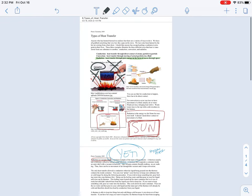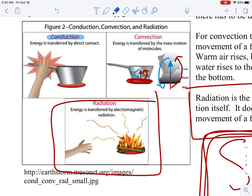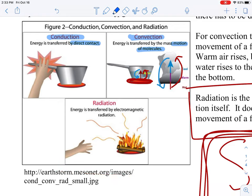So again, there are my three types of heat transfer. Like I said, pretty straightforward. You have conduction, which is direct contact. You have convection, which is the movement, the motion of molecules. Warm air, warm water rising, cool air, cool water going down. And then you have radiation.